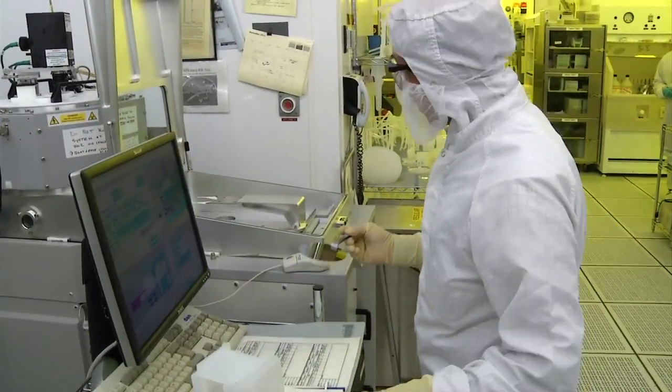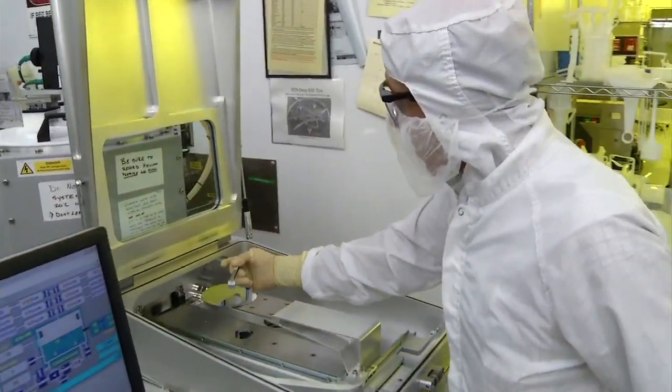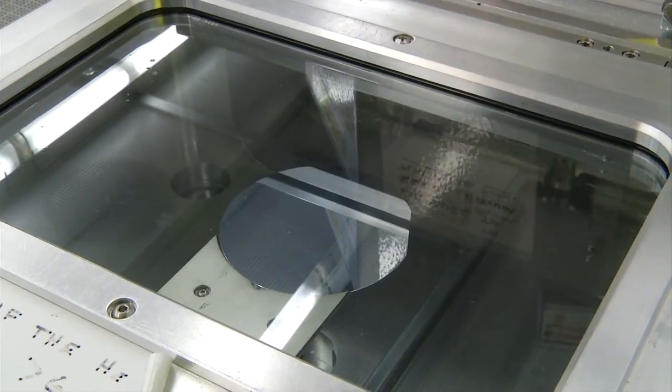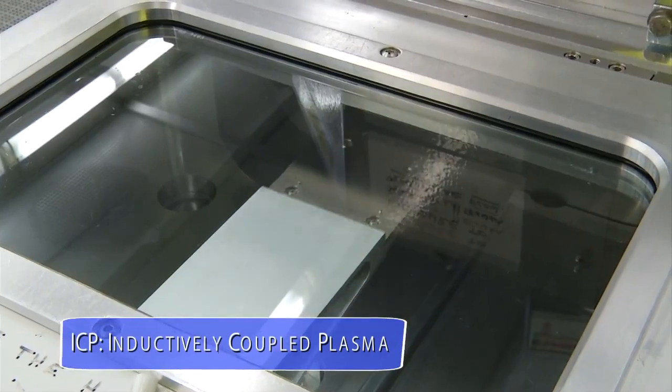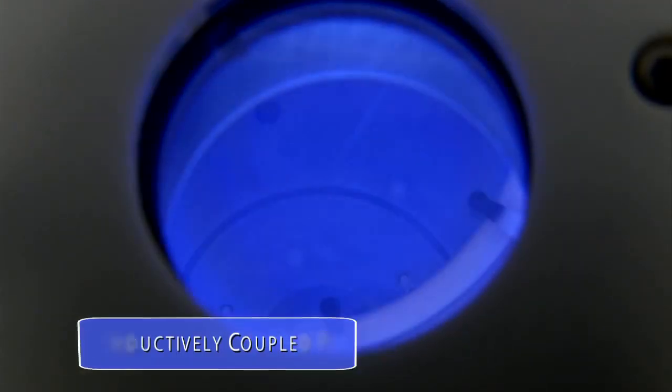In one of the most fascinating examples, the deep reactive ion etcher uses short etching and passivation cycles in a high-power ICP chamber to etch silicon hundreds of microns deep with 100 to 1 aspect ratios.